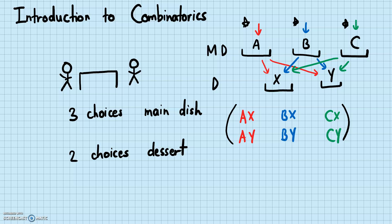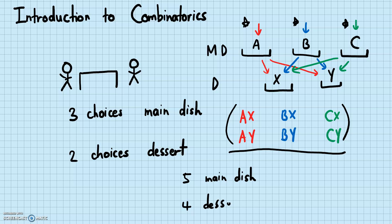This is not only used for choosing main dish and dessert at a restaurant — it can be used in many different areas. You can deduce the general rule for knowing how many choices there are. Let's say instead of three main dishes and two desserts, we had five main dishes and four desserts. Obviously there are going to be many more possibilities. How many combinations of main dish and dessert are possible from five main dishes and four desserts?